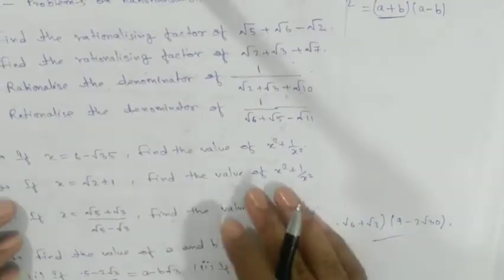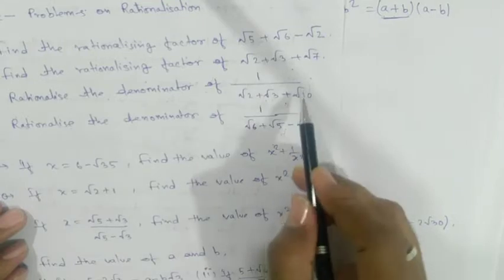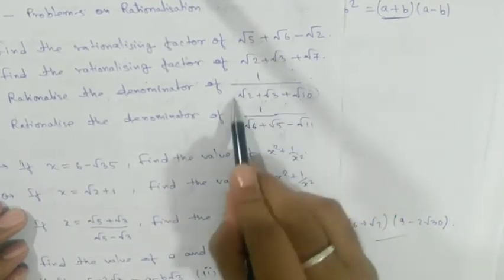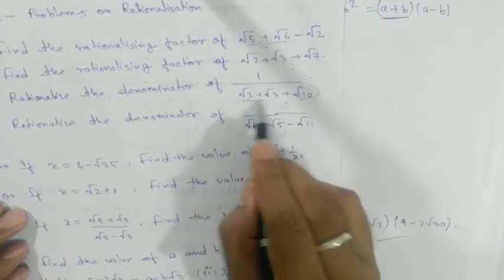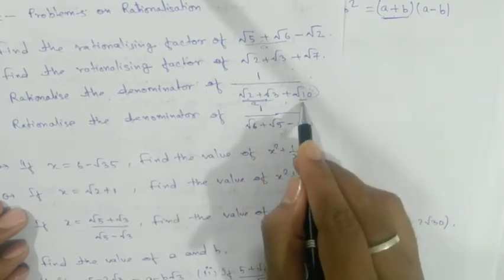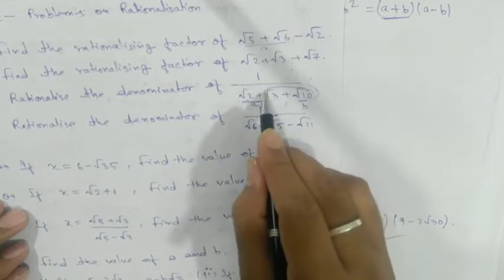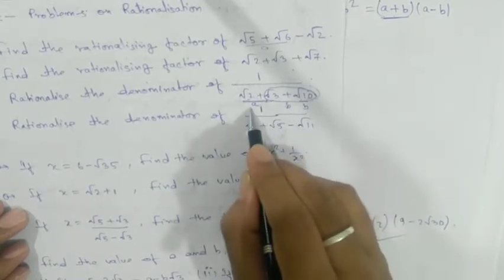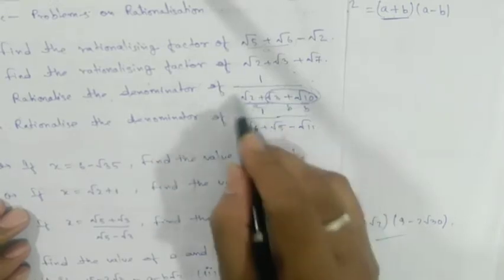Next problem: they are asking you to rationalize the denominator. You have to make the denominator into rational form. Again, take one part as your a and another as your b — for example, (√3 + √10) as b and the remaining as a. You can choose any two; we'll proceed with this grouping.